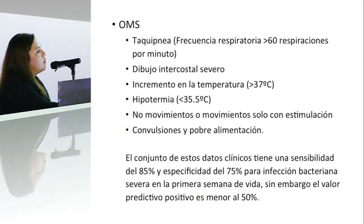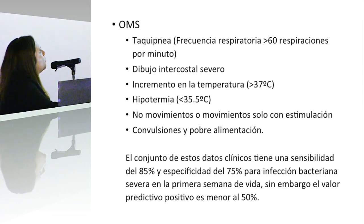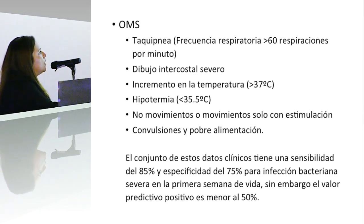También la OMS hizo unos criterios. Ellos proponen seis criterios: taquipnea, tiraje intercostal severo, incremento en la temperatura mayor a 37°C, hipotermia menor a 35.5°C, no movimientos o movimientos solo con estimulación, convulsiones y pobre alimentación. Refieren que en conjunto estos datos clínicos tienen una sensibilidad del 85% y una especificidad del 75% para una infección bacteriana severa durante la primera semana de vida.